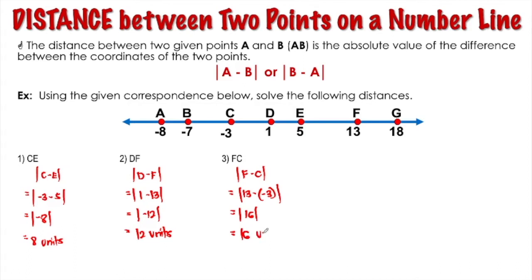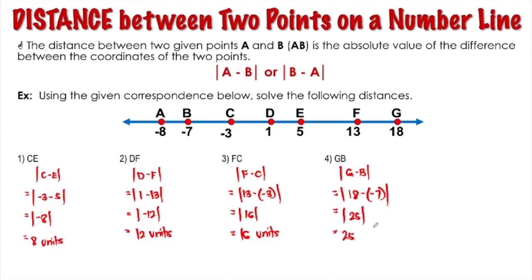Now let's have the distance between point G and point B. We have the absolute value of G minus B. Their coordinates are 18 minus negative 7, which gives us the absolute value of 25. So therefore, the distance between G and B is 25 units.